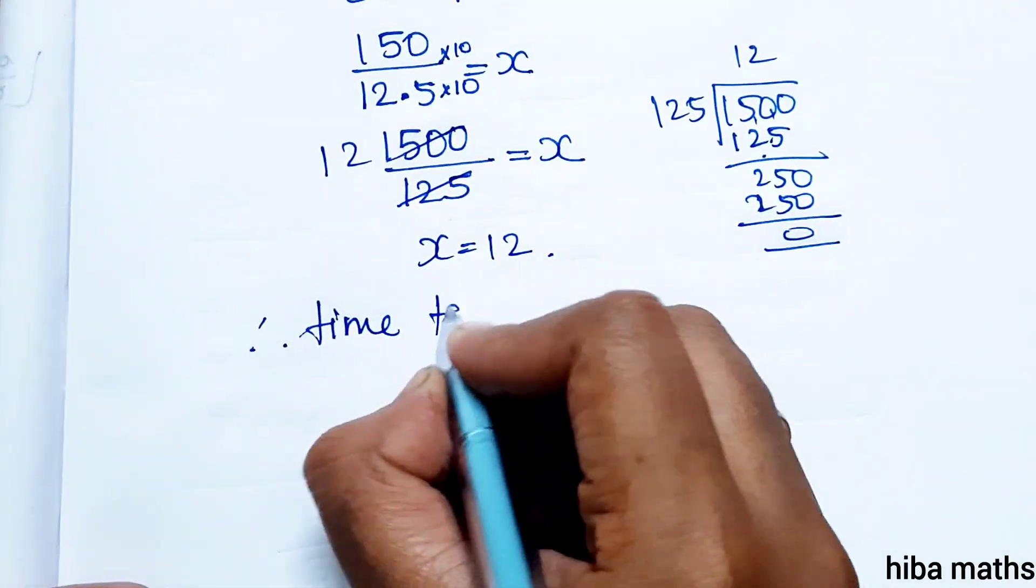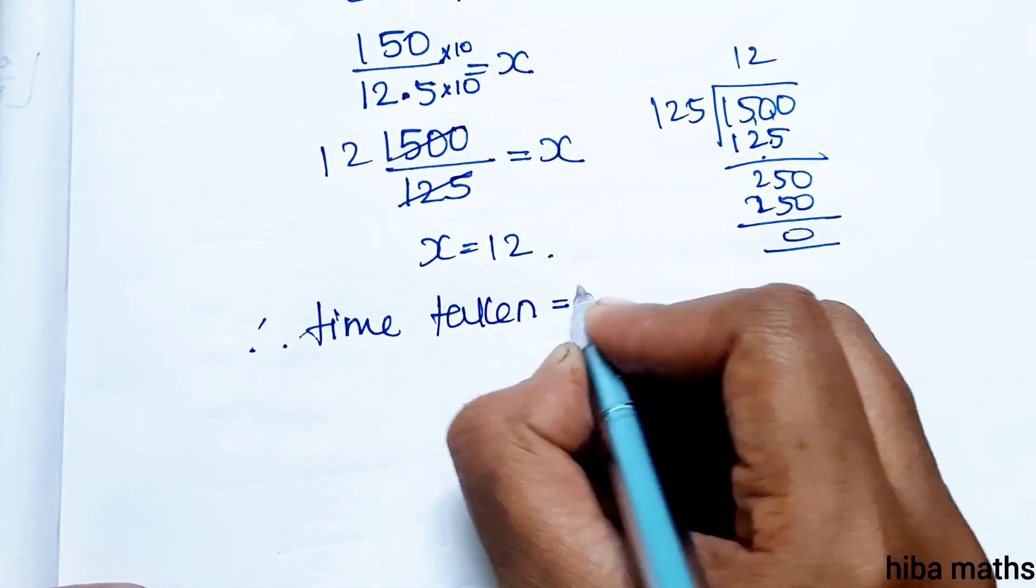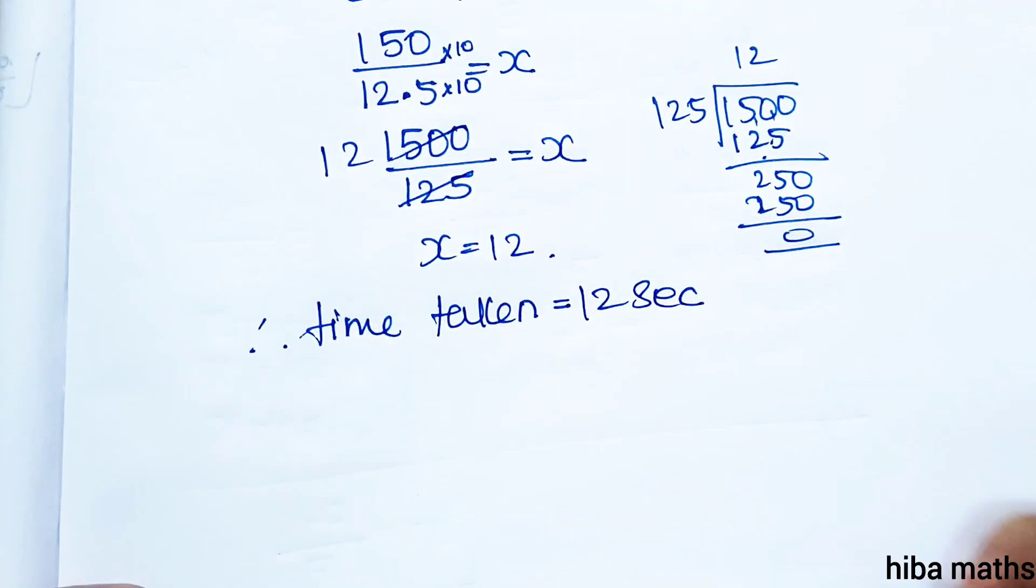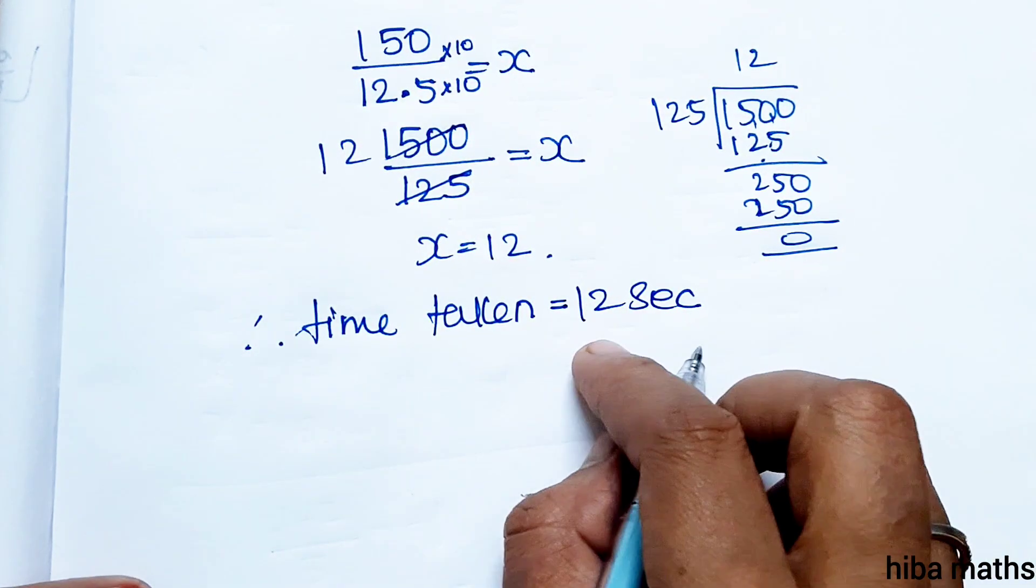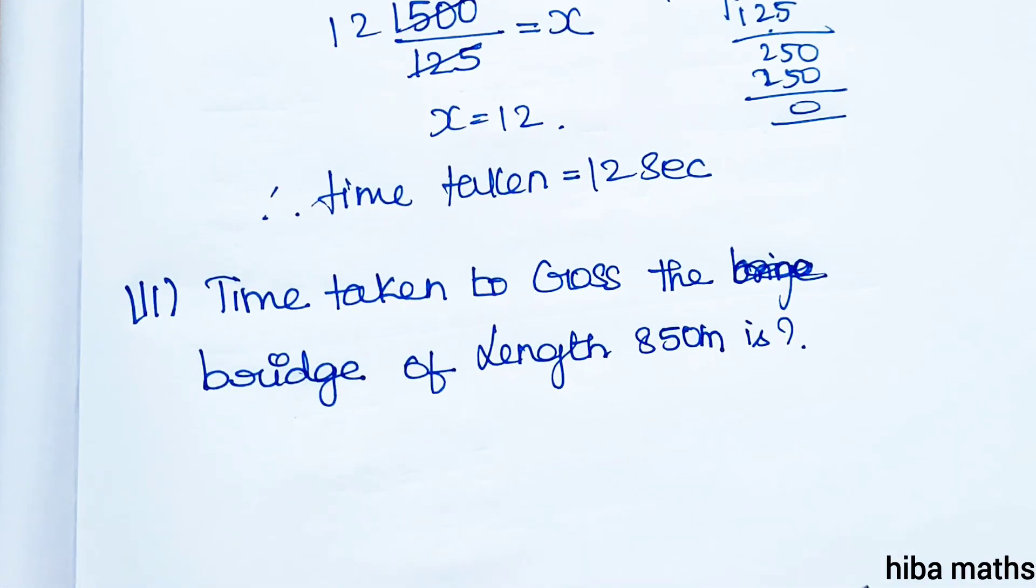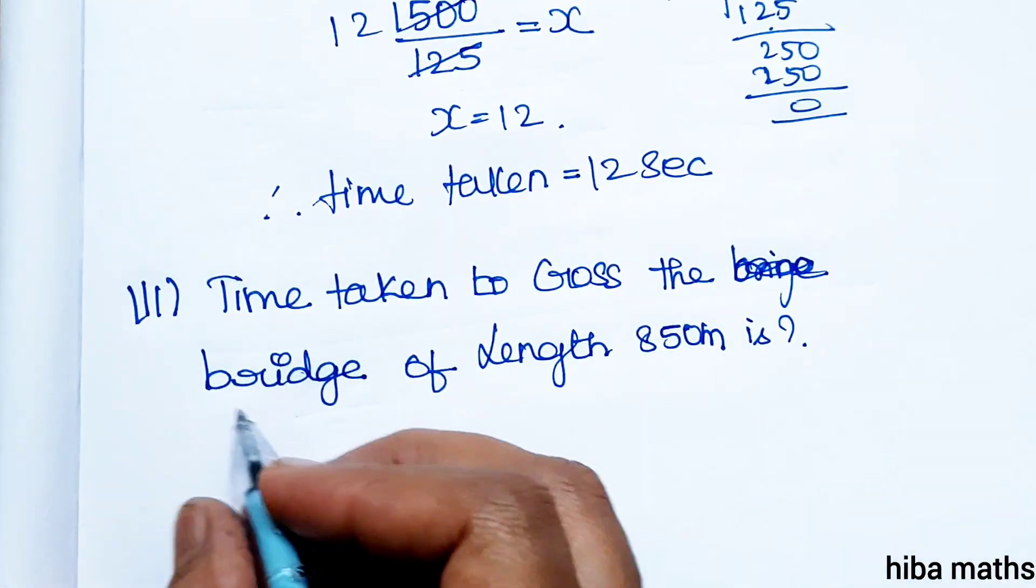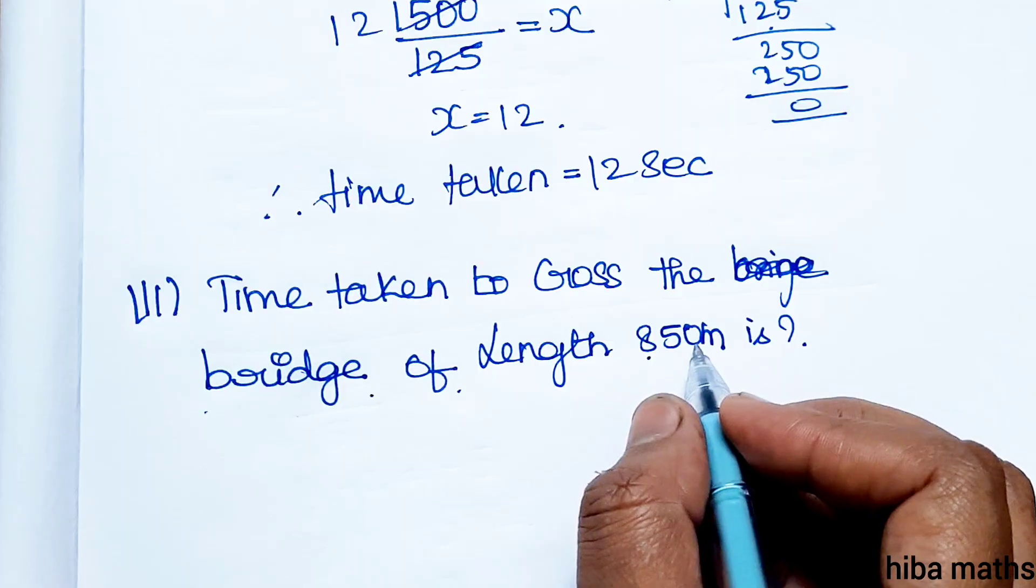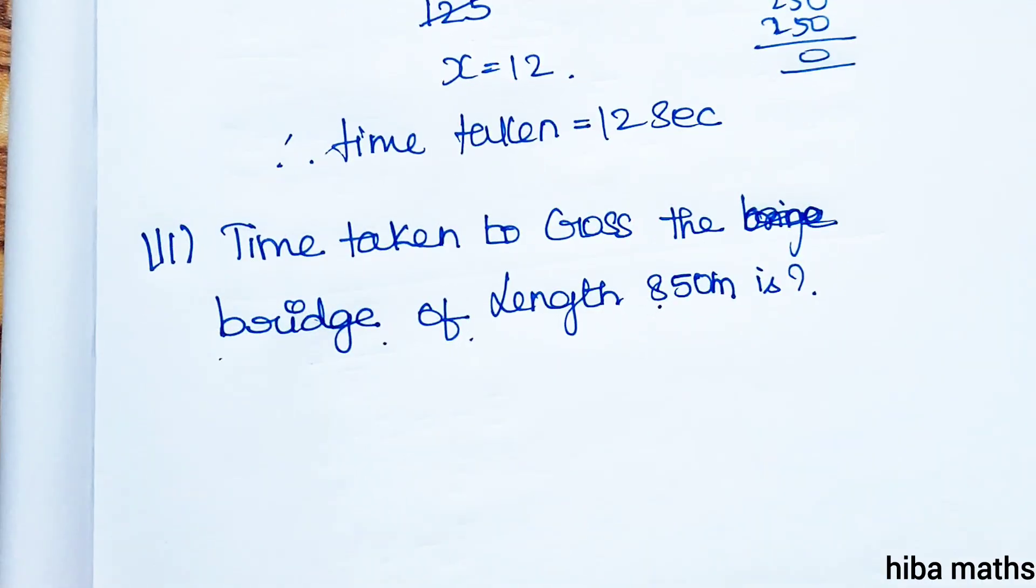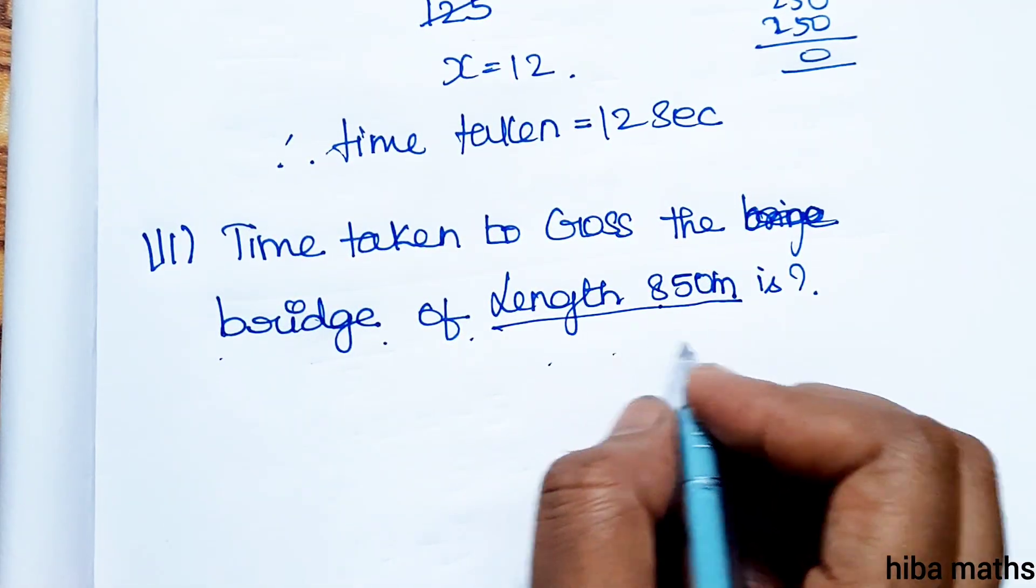Therefore, time taken is equal to 12 seconds. Third subdivision: time taken to cross the bridge of length 850 meter. Length is 850 meter.